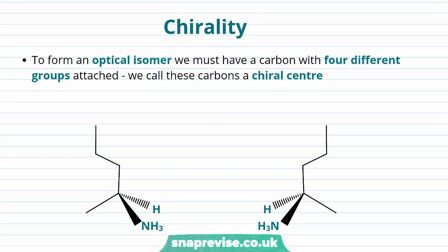When we introduced isomerism in this video, we gave the example of a carbon with four different groups attached to it. And in fact, this is a necessity to form something that has an optical isomer.